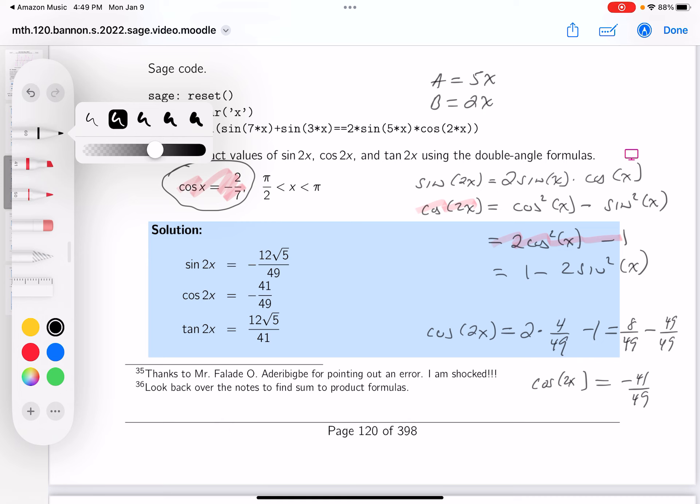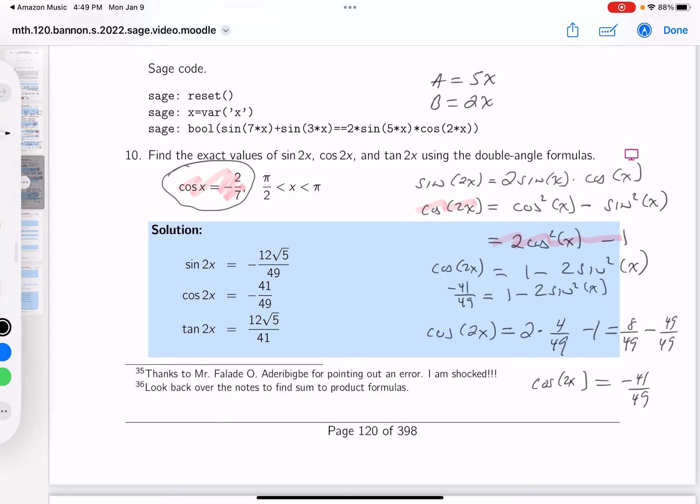And I'm looking at this thing over here, the cosine of 2x. Well, I know what it is. It's minus 41 over 49. And then I get 1 minus 2 sine squared of x. So I'm going to go through this and see if I can figure this out now. I got to solve for sine, don't I? And I think I can do that.